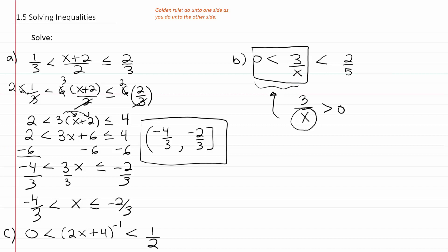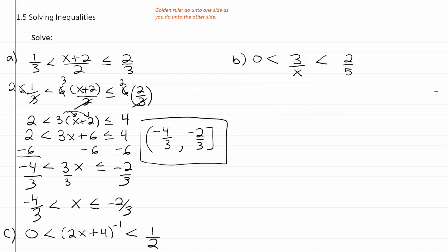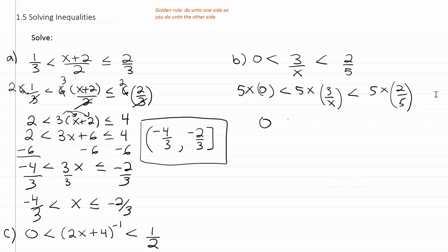We can ignore that piece and just solve assuming x is greater than 0. That's important because if we multiply both sides by x, we don't have to reverse the inequality symbol. Multiplying everything by the LCD, which is 5x: 5x times 0 is 0, less than the x cancels giving you 5 times 3 which is 15, and then less than — the 5 cancels leaving 2x.